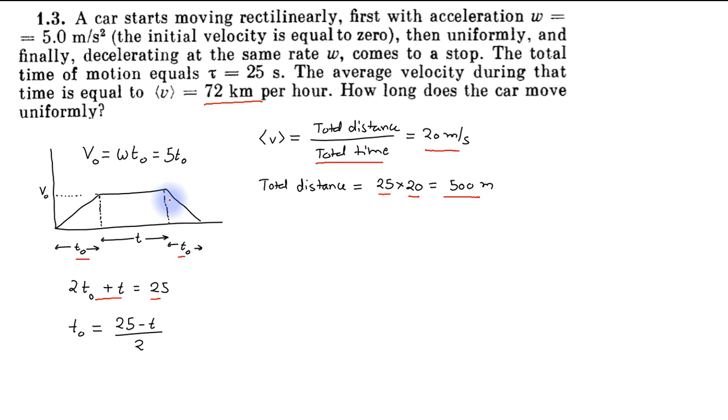So the area of this velocity-time graph must be equal to 500 meters. Because it is a trapezium, its area will be equal to half into sum of parallel sides.